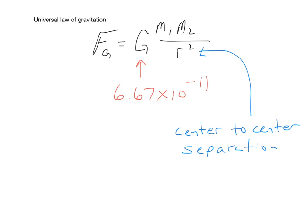This law states that any two masses will exert a force of attraction on each other. And that force is directly proportional to the amount of mass, but inversely proportional to the square of the distance.